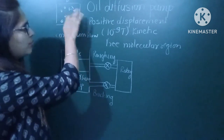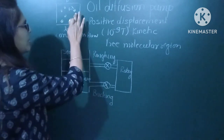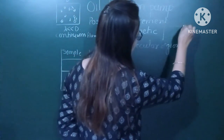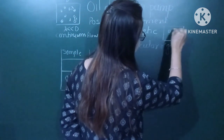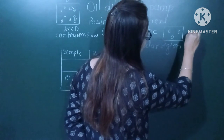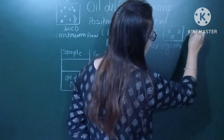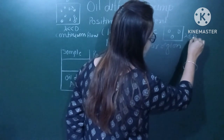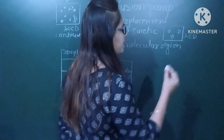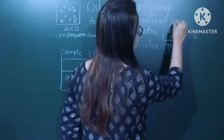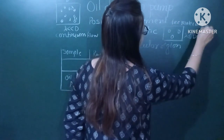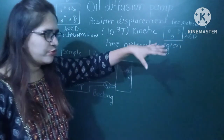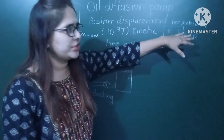As the air molecules go on reducing, at a certain point lambda becomes less than or equal to D — this is called a free molecular region or free molecular flow. The oil diffusion pump works in this free molecular region.